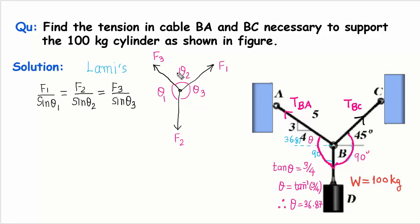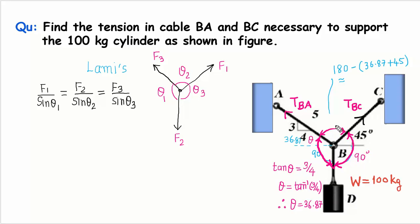For Lamy's theorem we need the angle between two forces. This angle from one segment to another is known to us. Now we need to find the remaining angle. Since this is 45 degrees and this is 36.87 degrees, and the overall angle from here to here is 180 degrees, so 180 minus (36.87 plus 45) gives us 98.13 degrees. So now we know the angle between any two segments of this whole system — the angle between AB and BC, between AB and BD, and between BC and BD. So all these angles are known and we can apply Lamy's theorem.